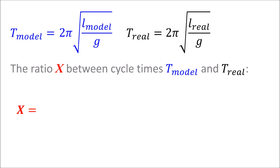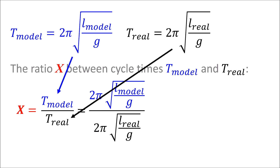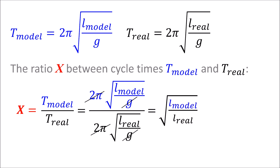Remember, the factor x is the ratio between the cycle times of the RC model and the corresponding original. Inserting the pendulum equations into that fraction and shortening some of the parameters and numbers, we obtain the square root of the ratio of the characteristic lengths of the model and original. And this ratio has the same meaning as the geometrical scale of the RC model.